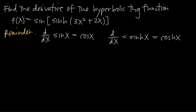In this video we're talking about how to find the derivative of a hyperbolic trig function. In this particular problem, we've been given the function f of x is equal to sine of hyperbolic sine — which we sometimes call sinh — of 3x squared plus 2x.